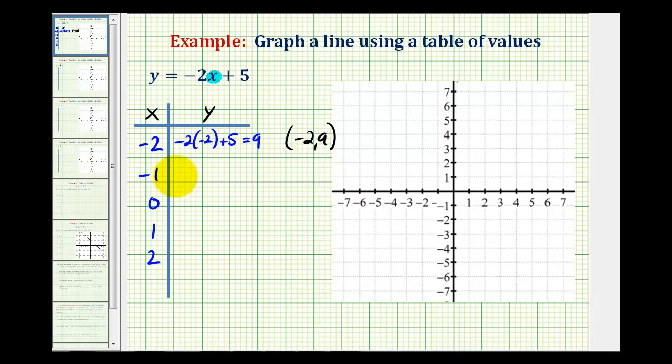When x is negative one, we'd have negative two times negative one plus five. Well this would be two plus five or seven. So that means the point negative one, seven should also be on the line.